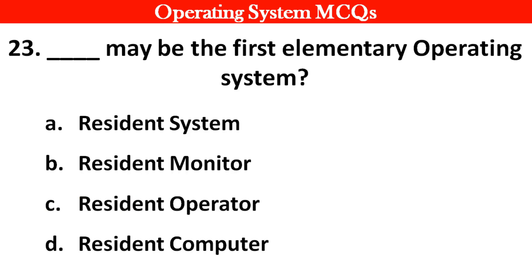Next question: Dash may be the first elementary operating system. Options: A. Resident systems. B. Resident monitors. C. Resident operators. D. Resident computers. Right answer is option B: Resident monitor.